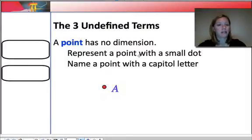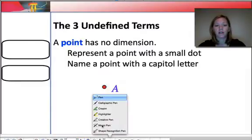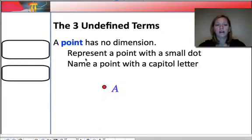So when we're working in geometry, we always represent a point with a small dot and a capital letter. So here you can see we represent a point with a small dot, right? And we always name a point with a capital letter. So here we have a single point, and that would be point A.